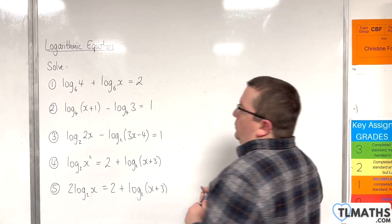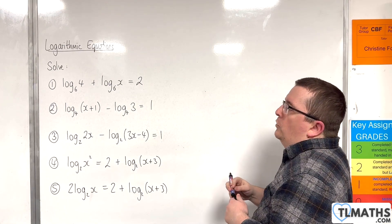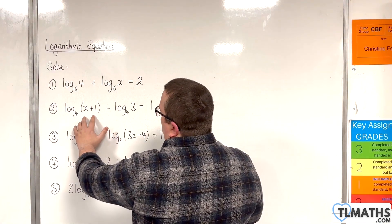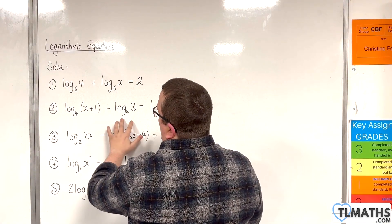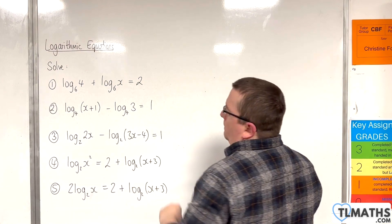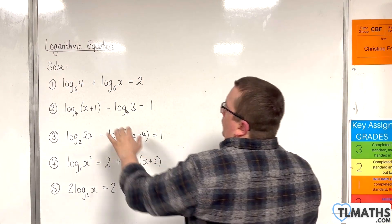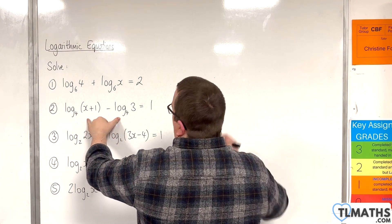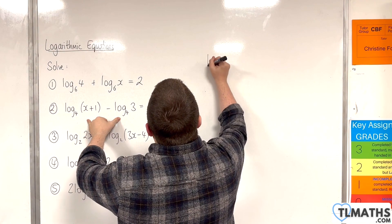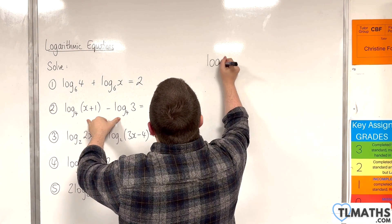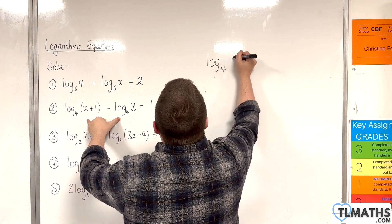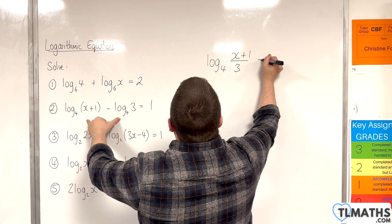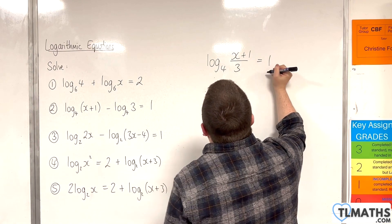Now number 2: log base 4 of (x plus 1) take away log base 4 of 3 is equal to 1. Use the quotient rule to bring those two together. We can write that as log base 4 of (x plus 1) over 3 is equal to 1.